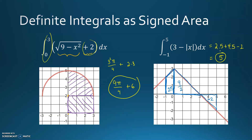These graphs were already provided, but if they weren't, you should be able to graph 3 minus the absolute value of x and also graph that semicircle.